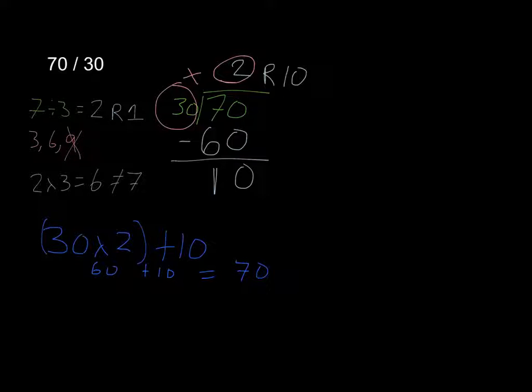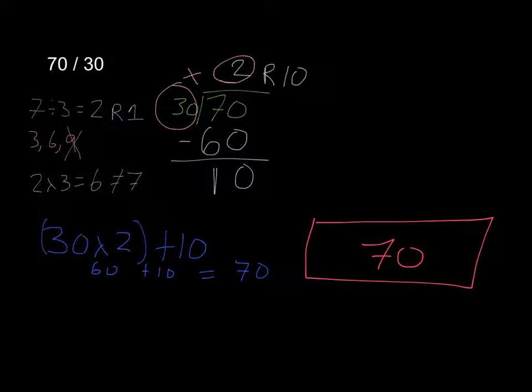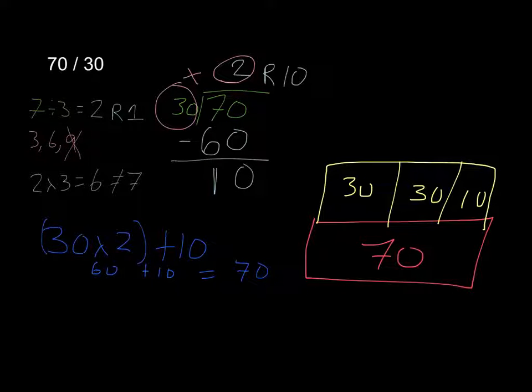If it helps you, you can draw rectangles where you have a rectangle of 70 and a smaller rectangle that you break down. You have 30 here, 30, and 10, which is the same. That's 30 plus 30 plus 10, which is 70. Different way to write the same number.